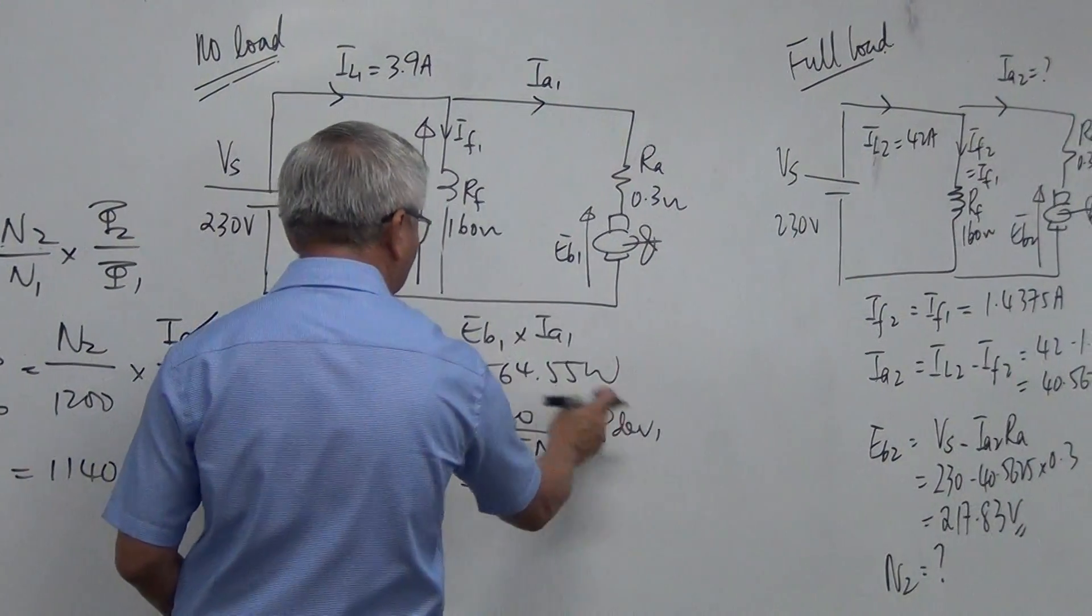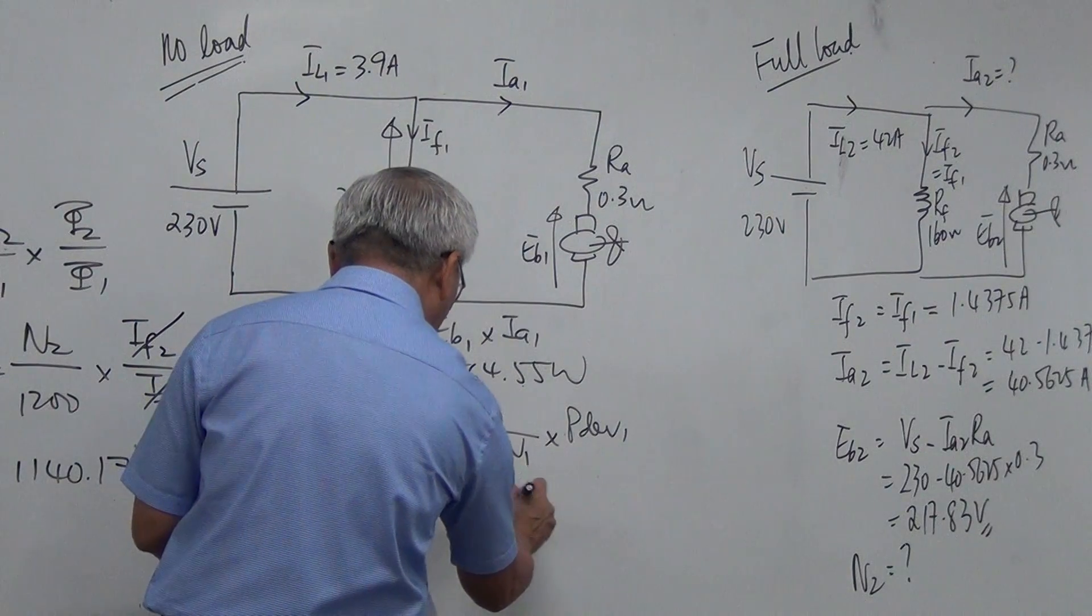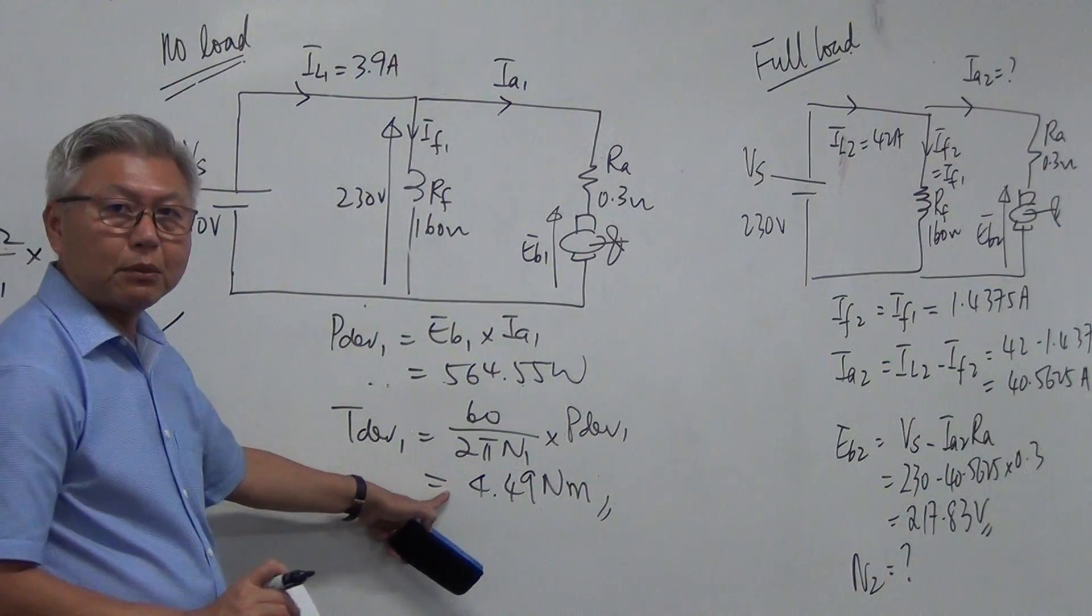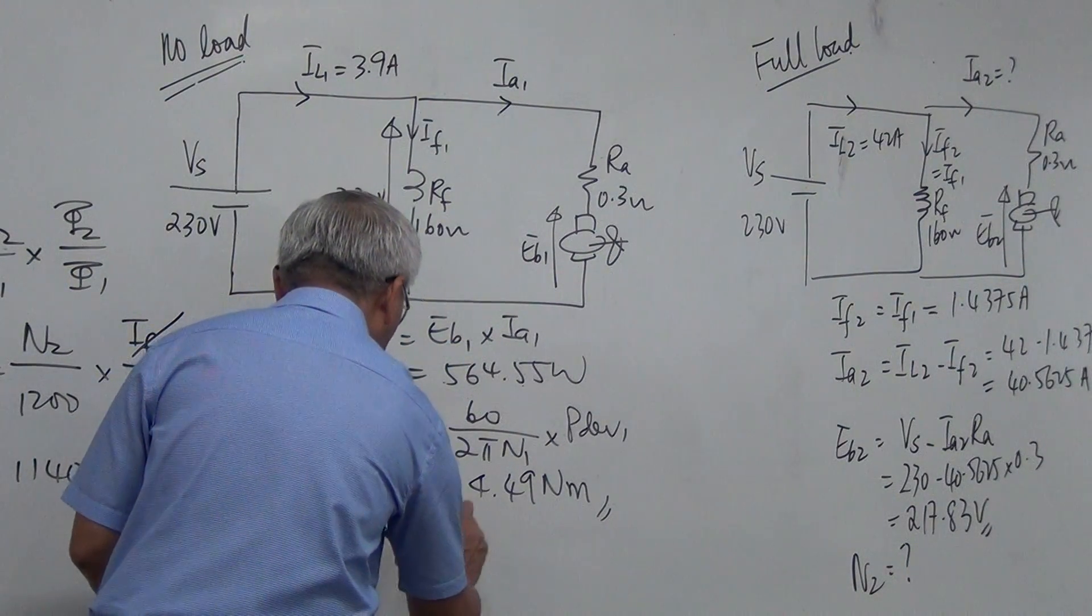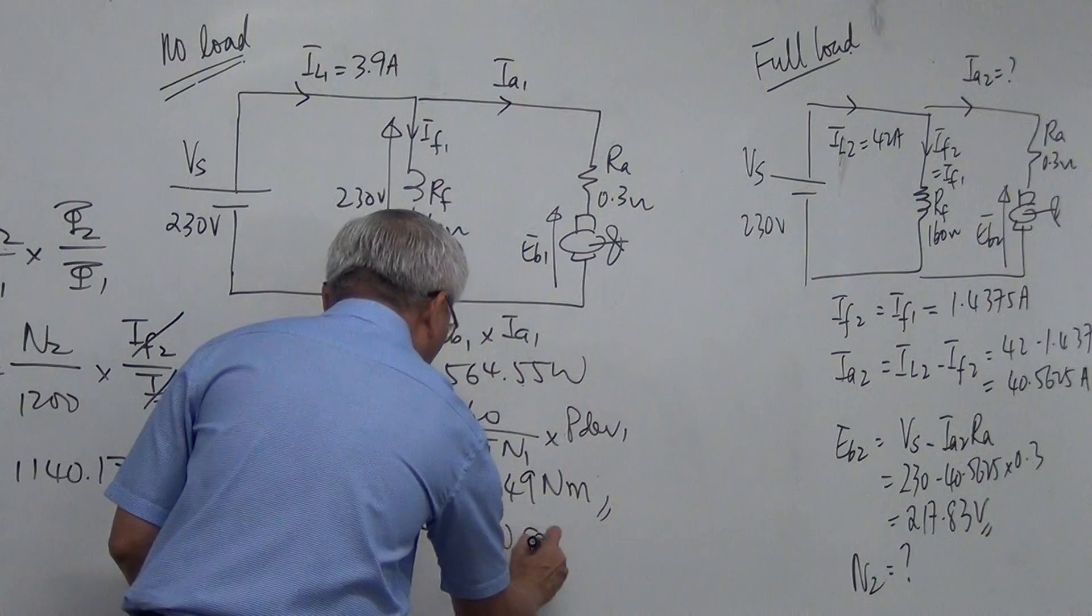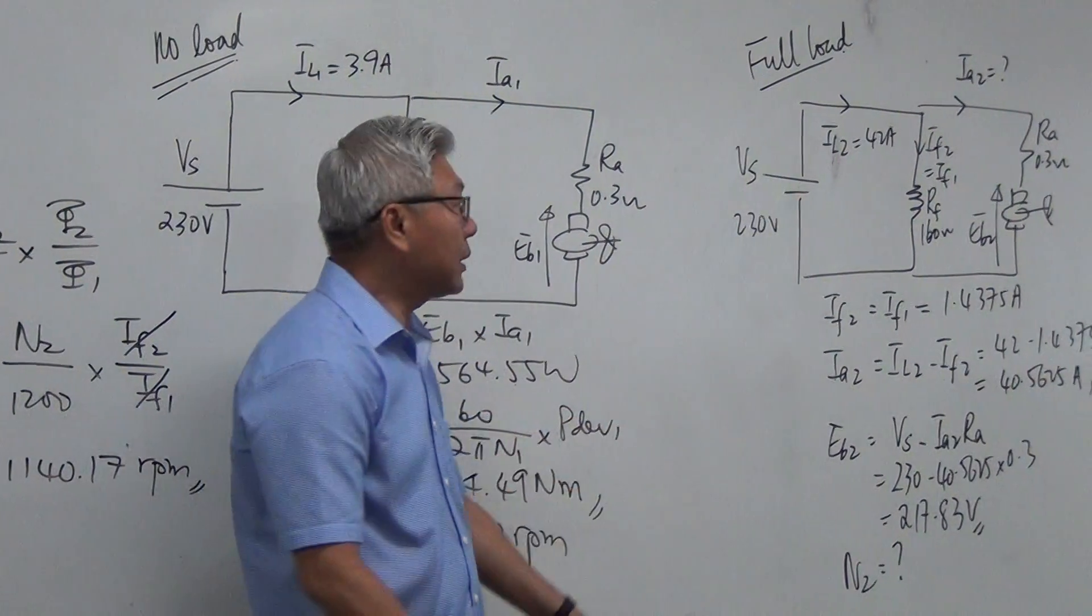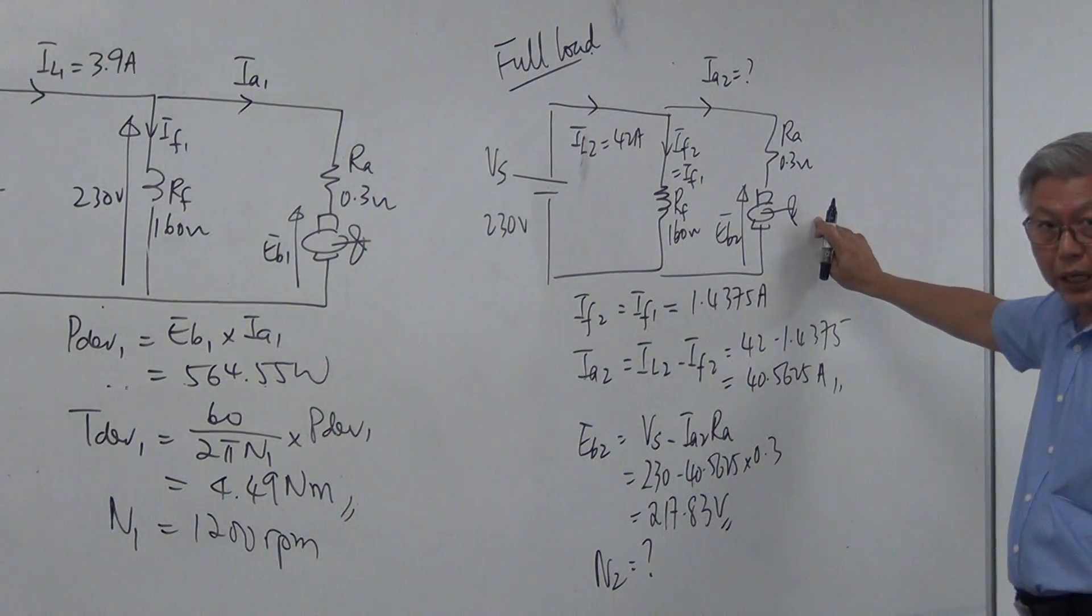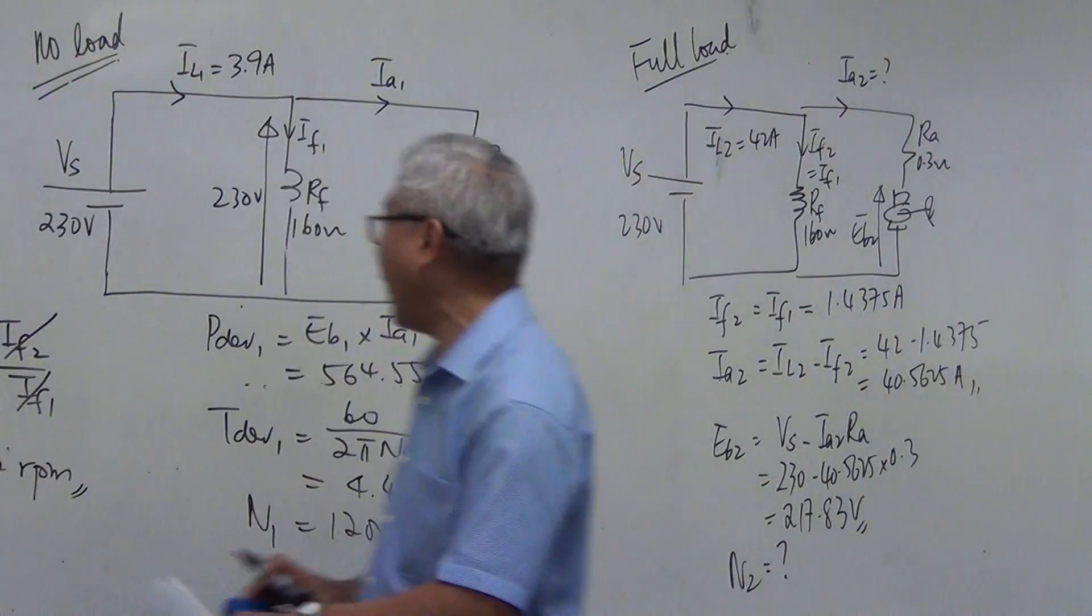1200 RPM and power developed is this value. And I found that the torque developed is 4.49 Nm. So at 4.49 Nm, the speed was 1200 RPM. Now when it's on full load. Full load means I'm attaching a heavy object to it and it's doing a lot of work.